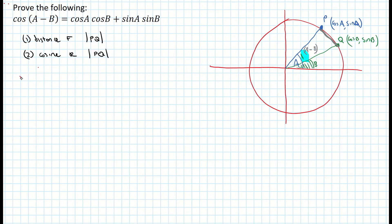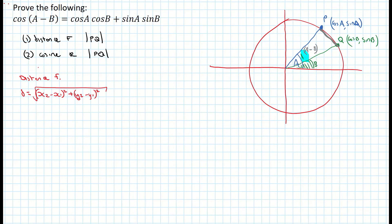My first step is to use my distance formula. From my log tables, the distance formula is the square root of (x2 minus x1) all squared, plus (y2 minus y1) all squared. Writing down my two points, the coordinates of P and Q are (cos A, sin A) and (cos B, sin B). I'm going to label those as x1, y1, x2, y2, and dissolve them into my formula for distance.